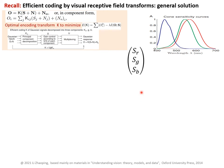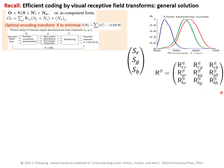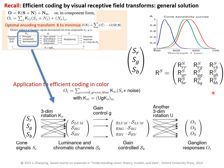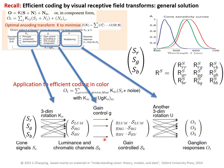If we also include the blue cones, making the input a three-dimensional vector, the correlation matrix becomes a 3×3 matrix. This includes self-correlations within each cone type, cross-correlation between red and green cones, cross-correlation between red and blue cones, and cross-correlation between blue and green cones, as well as the blue cone self-correlation. The efficient coding recipe then applies as follows: decorrelation makes a rotation in three-dimensional space giving one luminance channel and two orthogonal chromatic channels, gain control gives a gain to each of these channels, and multiplexing is another rotation matrix in this three-dimensional space.